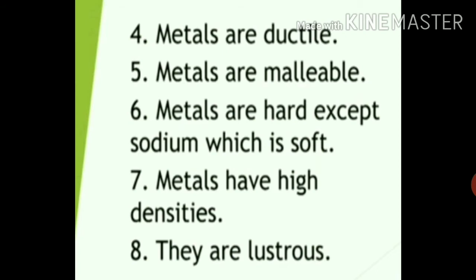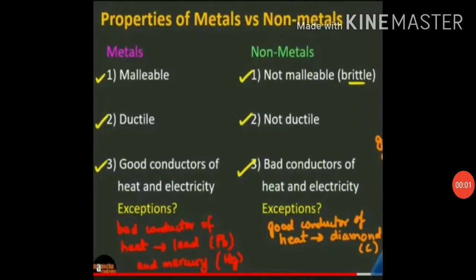Let us compare the properties of metals and non-metals. Metals are malleable — the property which allows metal to be hammered into thin sheets or foil is called malleability. Most metals are malleable. For example, gold, silver, aluminium and copper are highly malleable metals. Due to this property, metals are very useful — aluminium foil is widely used for safe packing of foodstuffs, medicines, chocolates, etc.